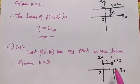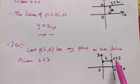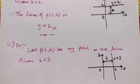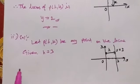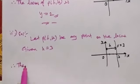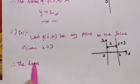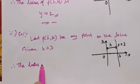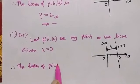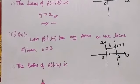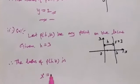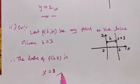The line parallel to Y axis is x equal to h. Therefore, the locus is x equal to k, k is 3. Okay, thanks for watching.